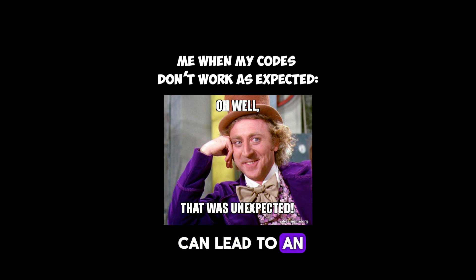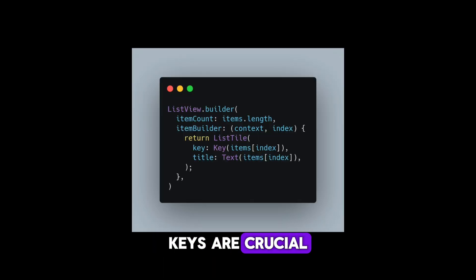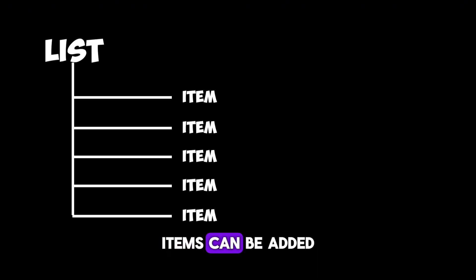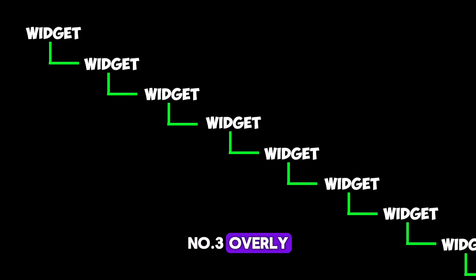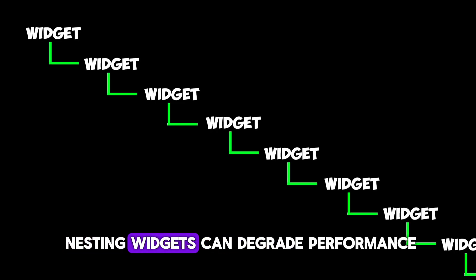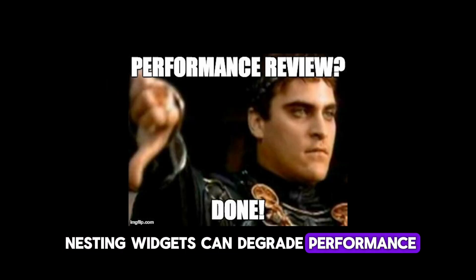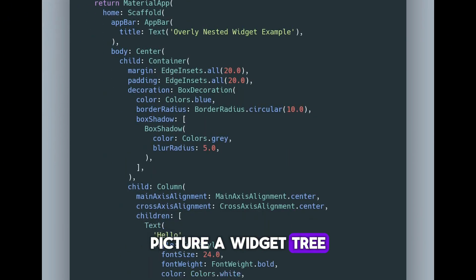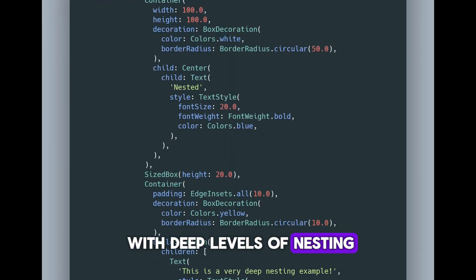Number two: forgetting to use keys in your widgets can lead to unexpected behavior. Keys are crucial, especially when dealing with dynamic widgets or reordering scenarios. For example, if you have a list where items can be added or removed, using keys ensures Flutter can efficiently update the UI without losing widget state.